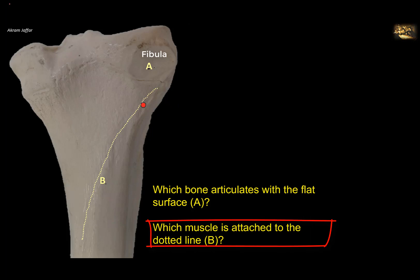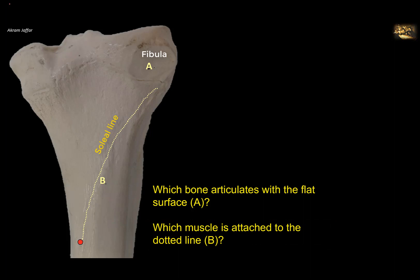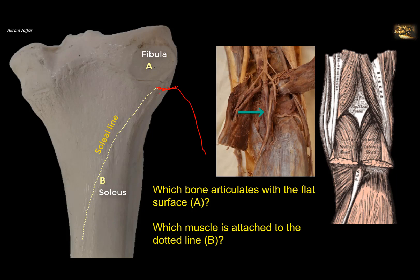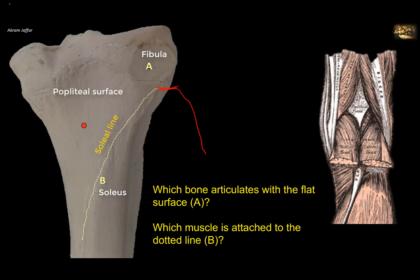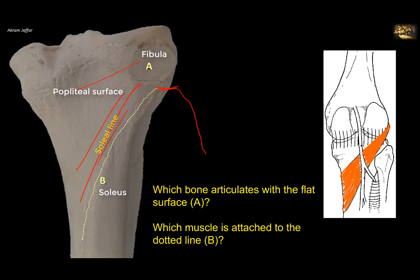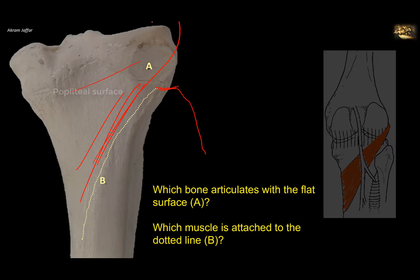Which muscle is attached to the dotted line? This is the soleal line, and it's called the soleal line because it is here that the soleus muscle is attached. The attachment of the soleus muscle is taken by an arch to reach the fibula, with the remaining part attached to the fibula. The arch provides for the passage of a neurovascular bundle — the tibial nerve and the posterior tibial artery. The surface above the soleal line of the tibia is the popliteal surface, where the popliteus muscle is attached, and its fibers converge to form a tendon attached to the lateral condyle of the femur.